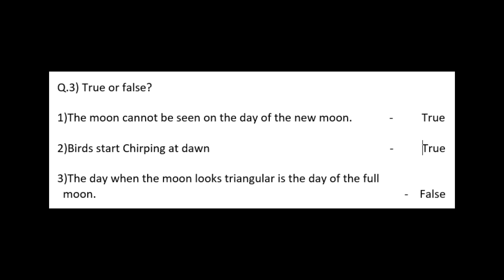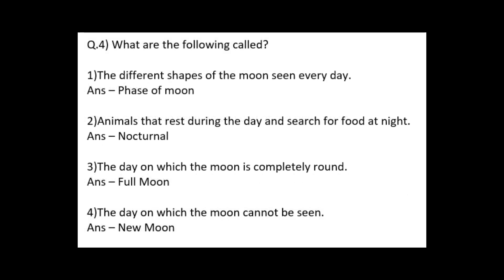Question number 4: What are the following called? 1. The different shapes of the moon seen every day? Answer: phase of the moon. 2. Animals that rest during the day and search for food at night? Answer: nocturnal. 3. The day on which the moon is completely round? Answer: full moon. 4. The day on which the moon cannot be seen? Answer: new moon.